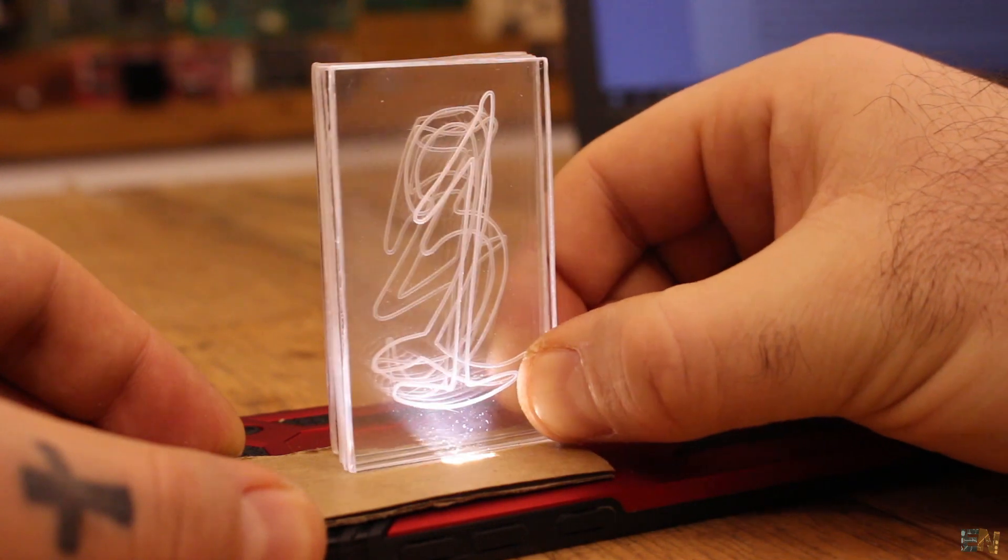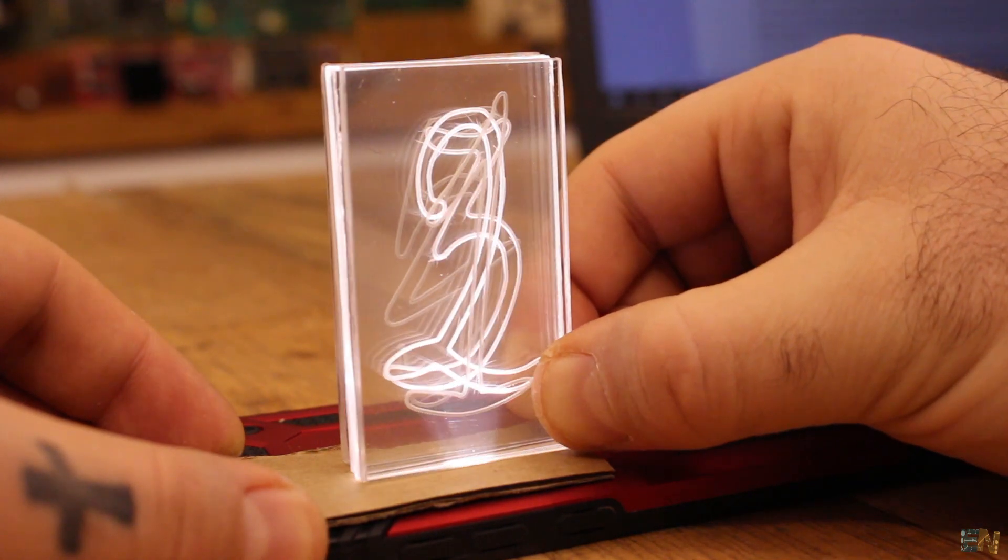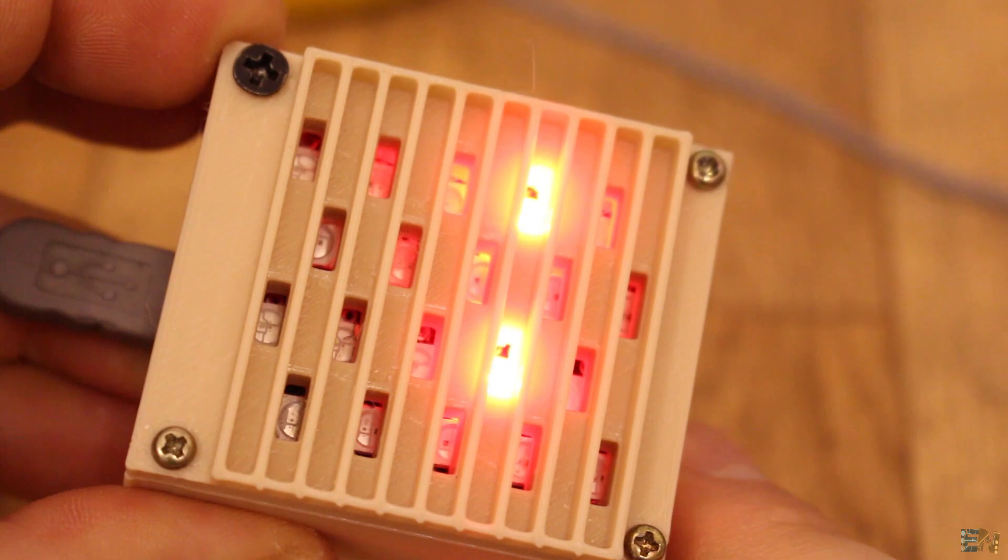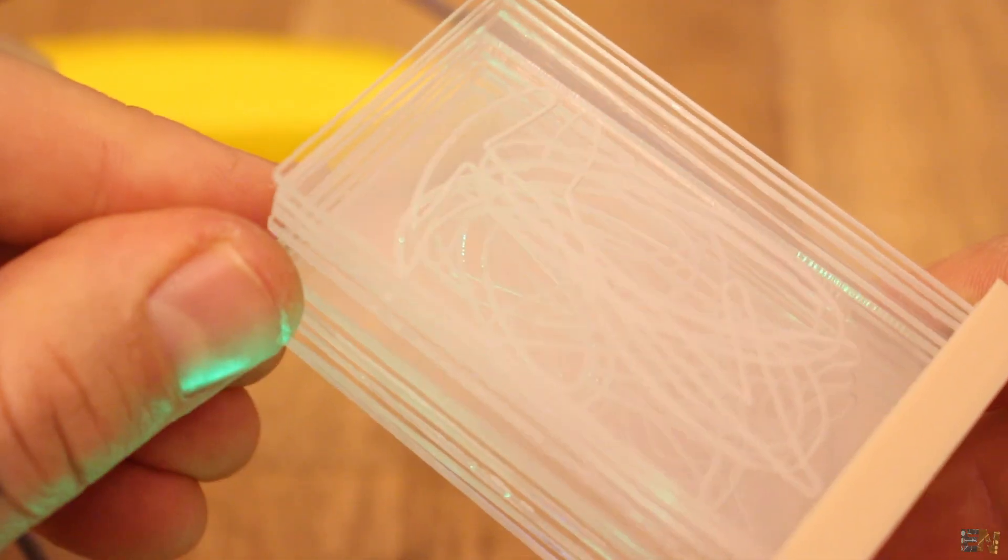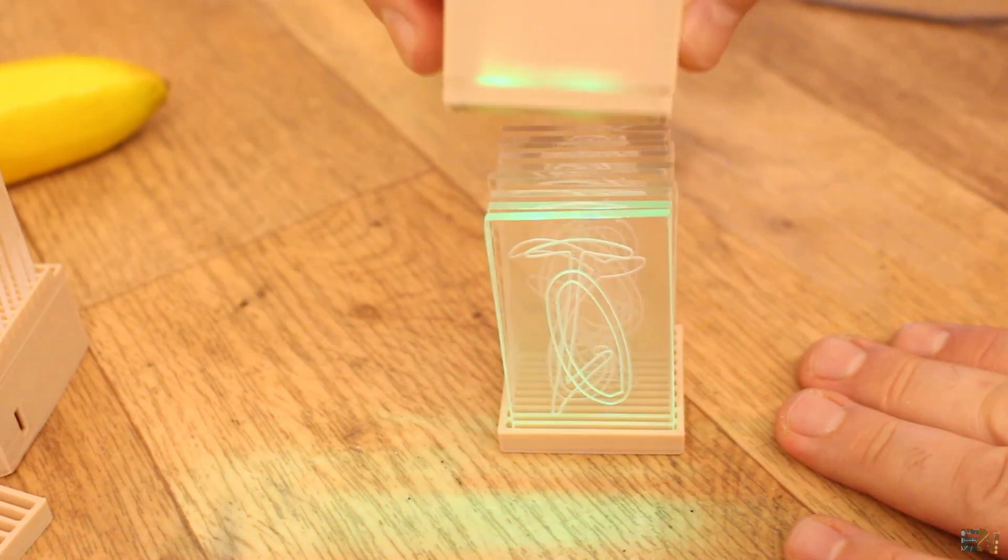If light is turned on only below a certain acrylic board, only that board will light up. If we use 10 boards with engraved numbers from 0 to 9, we can create all the numbers and we could make a clock for example.